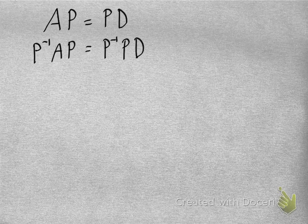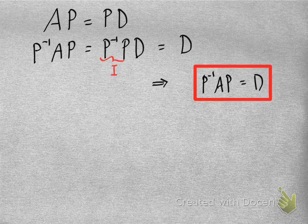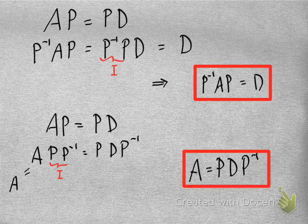Now let's see what we can do with this equation. If I multiply on the left on both sides by P inverse, notice that P inverse times P is just the identity matrix. On the right side I get this diagonal matrix D, and so I get that P inverse AP is a diagonal matrix. Similarly, I could redo the computation multiplying on the right by P inverse on both sides — P times P inverse is the identity — and so I get that A equals P times D times P inverse. What this says is that having two linearly independent eigenvectors tells me that A is similar to a diagonal matrix.